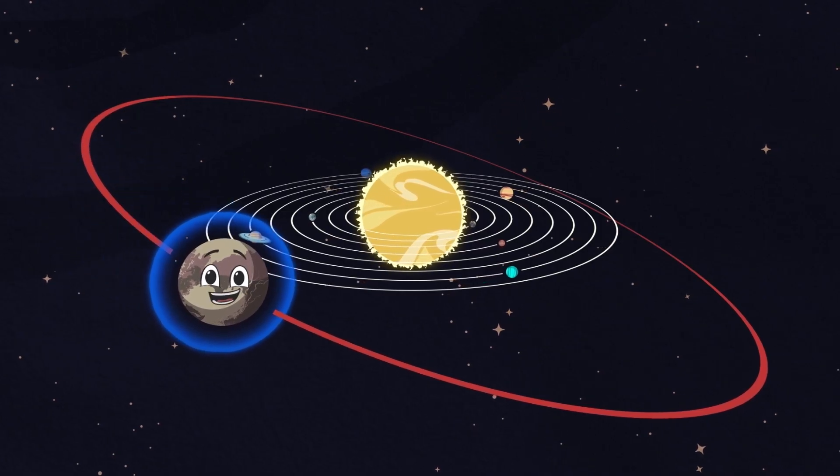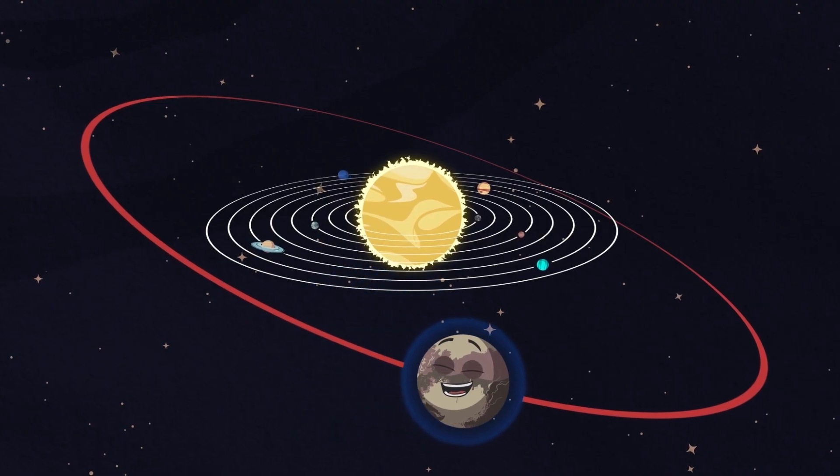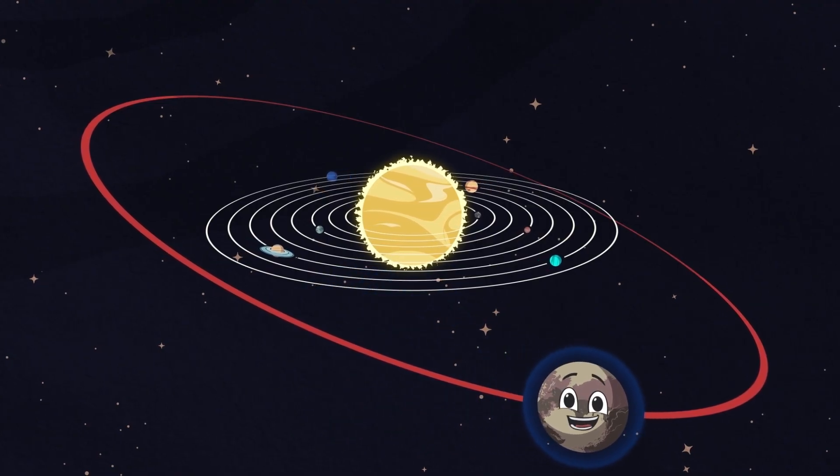My weak atmosphere expands when I'm closer to the sun, and it collapses as I move further away on my run.